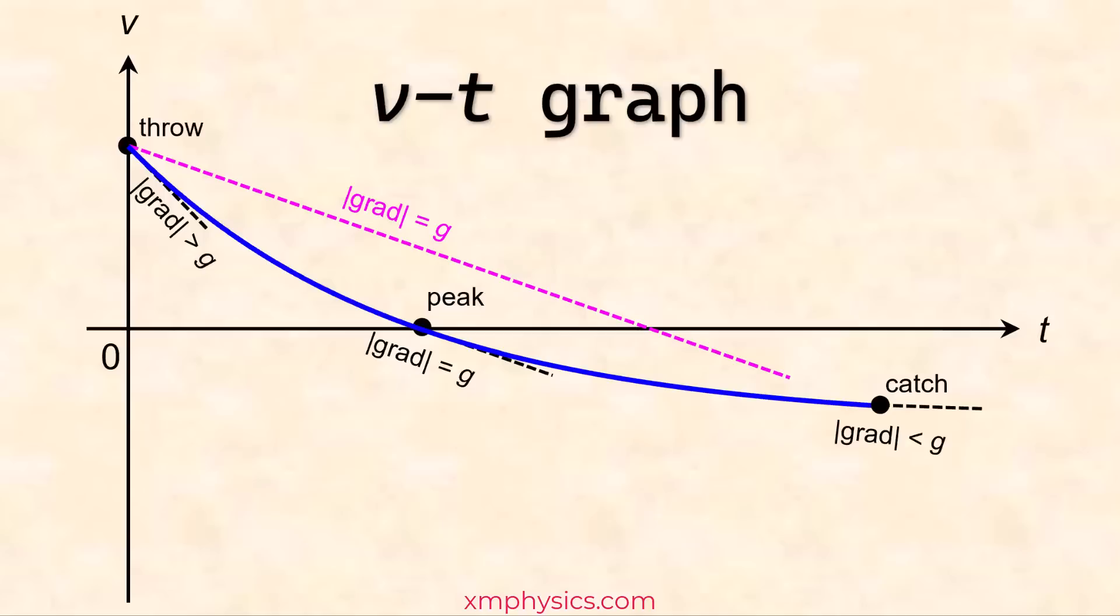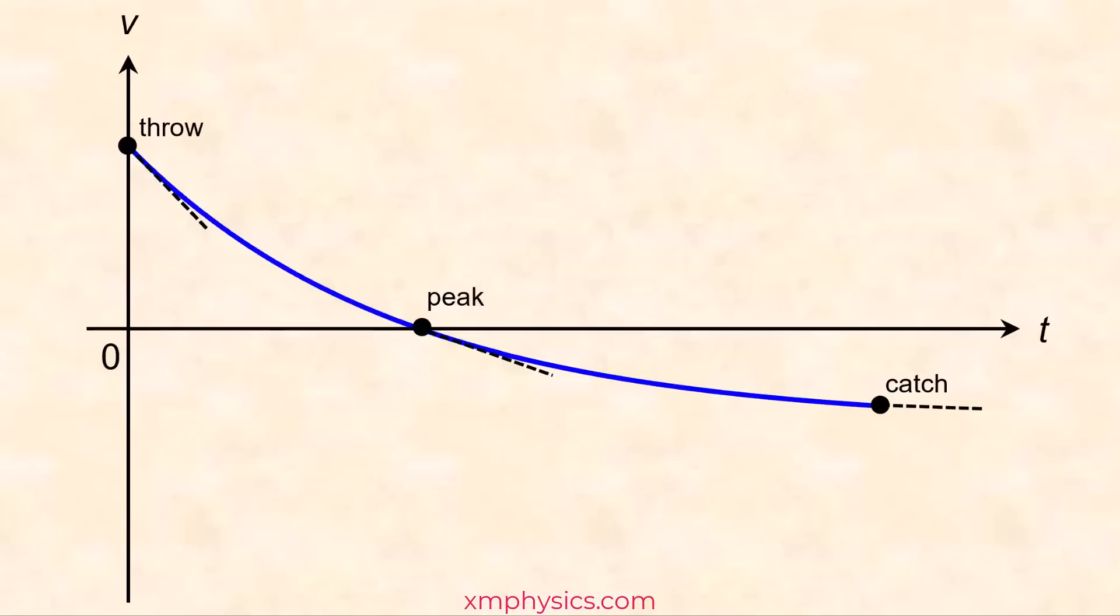So how do we know where to end the graph? Remember, the area under the VT graph represents displacement. So if we are ending the graph where the ball returns to the same height level, then the positive area, which represents the rise height, must be matched by the negative area, which represents the fall height. Just integration, all right?